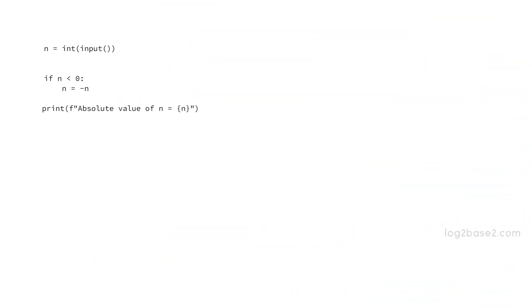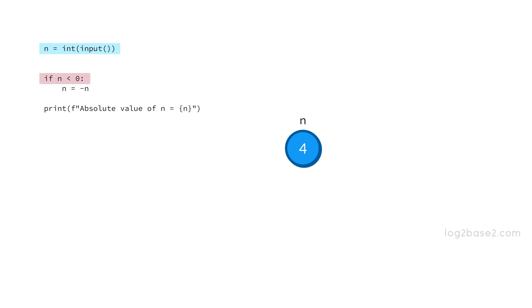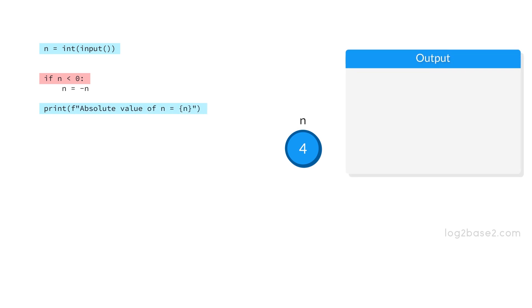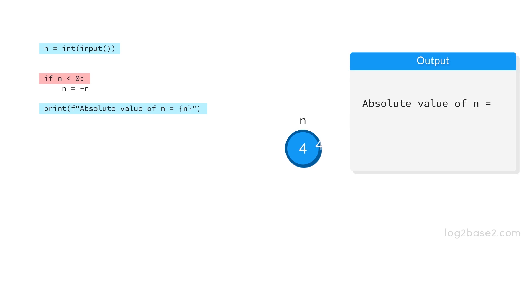Now let us see how to implement it in Python. First, read the number to variable n using the input function — write n equal to int of input. Suppose the user entered the number 4 and it will be stored in n. Check if n is less than 0 — but it is not. So print: absolute value of n is 4.